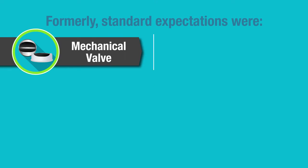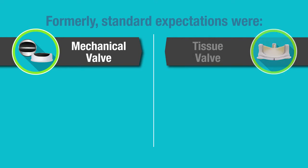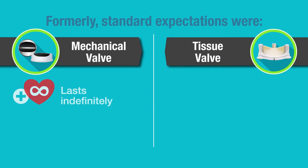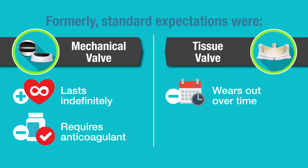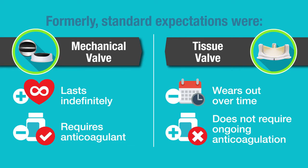What are the differences between them? The classic teaching is that a mechanical valve will last forever, but you have to be on anticoagulation for it. A tissue valve will wear out over time, but you don't need to be on any blood thinners for it.